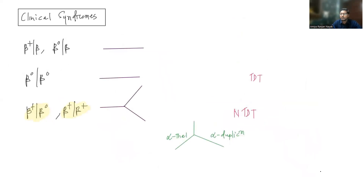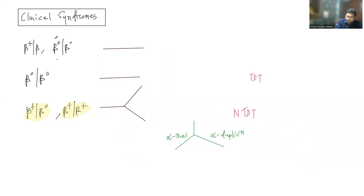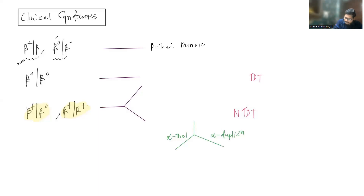Now we'll see the clinical syndromes — the types of beta thalassemia. This is an autosomal recessive condition. If only one allele is affected, producing no beta globin (beta zero), and the other allele is absolutely normal and producing beta globin, this is a heterozygous condition known as beta thalassemia minor, beta thal trait, or carrier. These patients are asymptomatic.